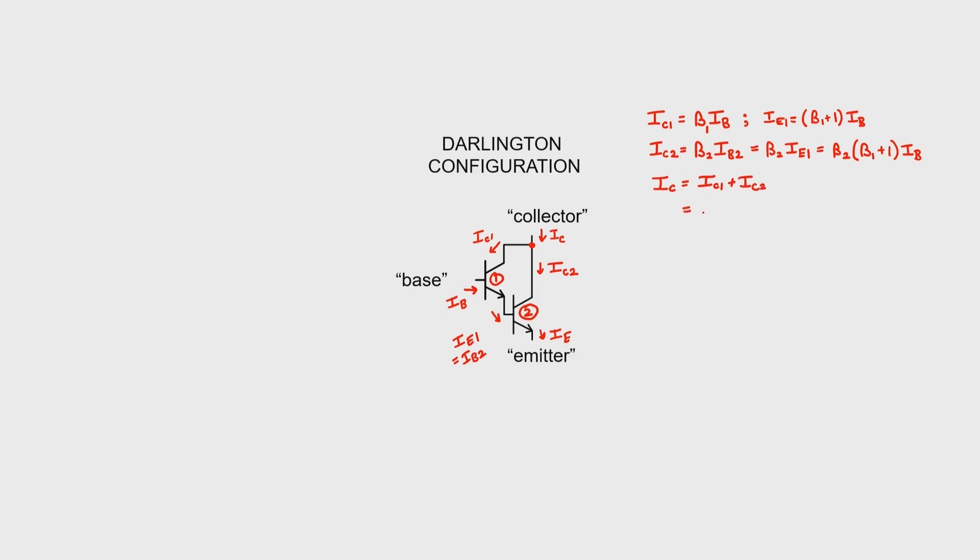And I can now substitute in from what I've just written. So for IC1, we have it there on the top row, and for IC2, we have it over here. Let's multiply this out a little bit. Finally, I want to factor out IB.